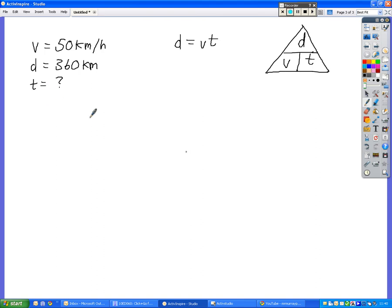You're looking for T here. So this is the point where you would cover up the T, and that would leave you with D divided by V. Similarly, if you were looking for V, you would cover up the V, and then you would get D divided by T. So T is D divided by V.